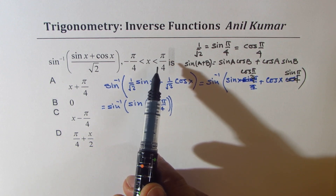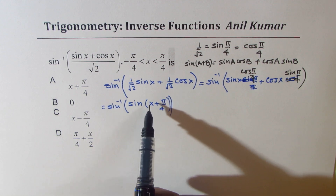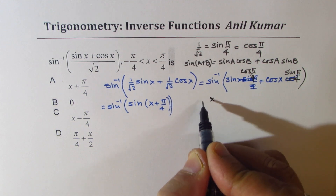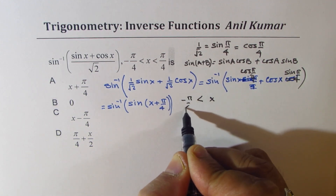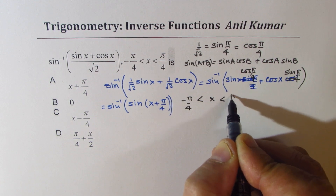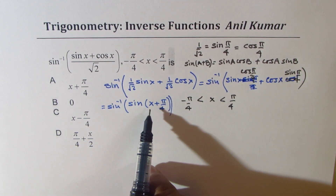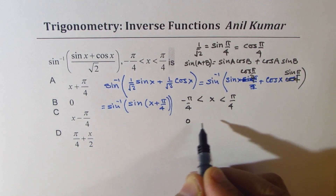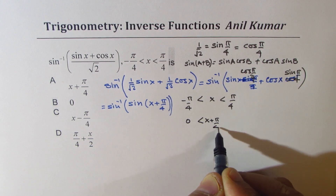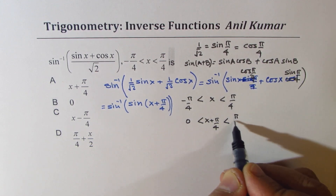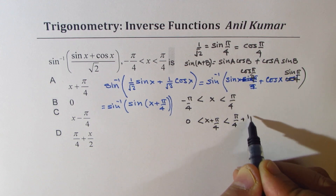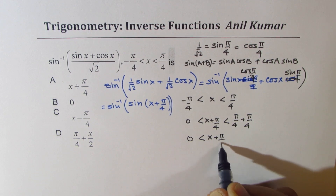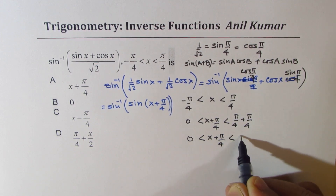What you need to do at this stage is see what happens to x + π/4. We're given x is between −π/4 and +π/4. Adding π/4 throughout: 0 < x + π/4 < π/2. So x + π/4 is between 0 and π/2.